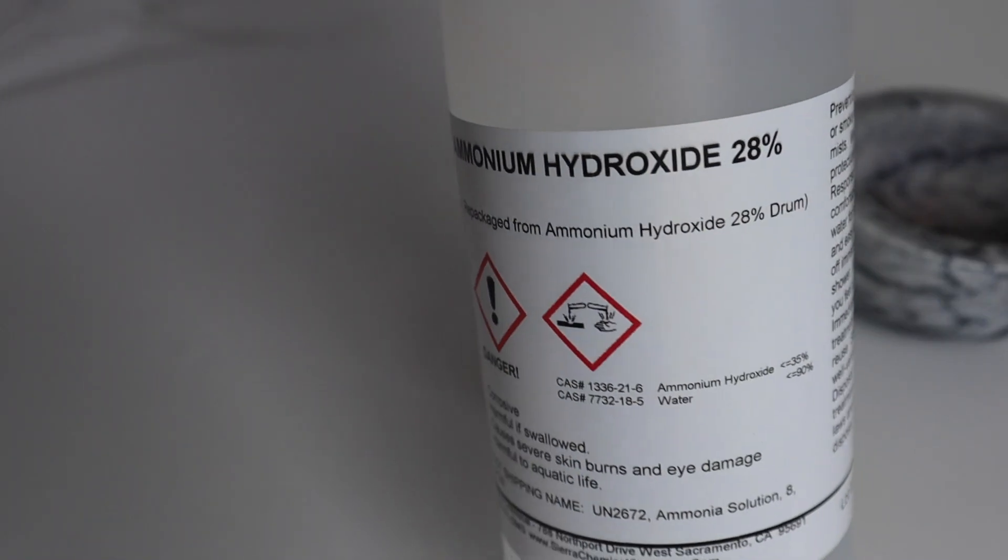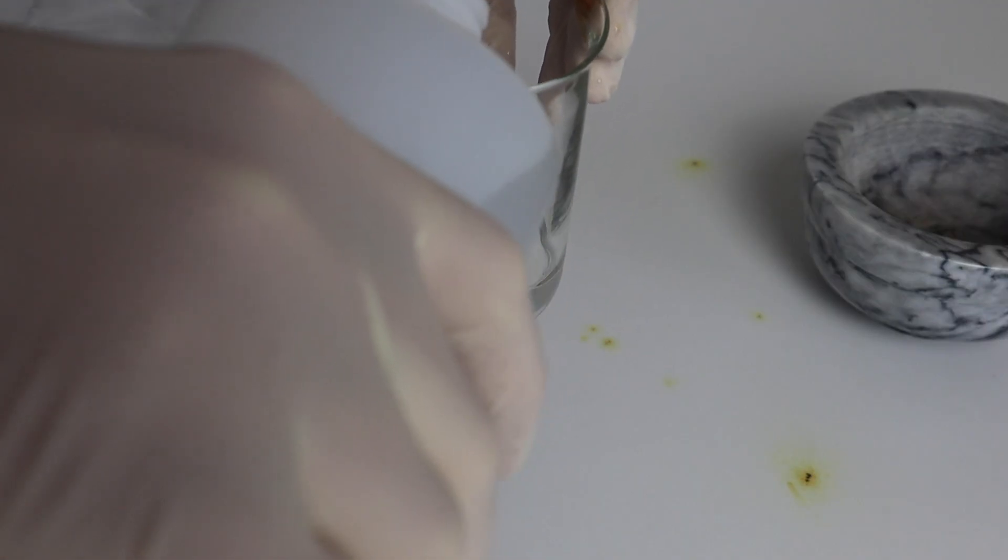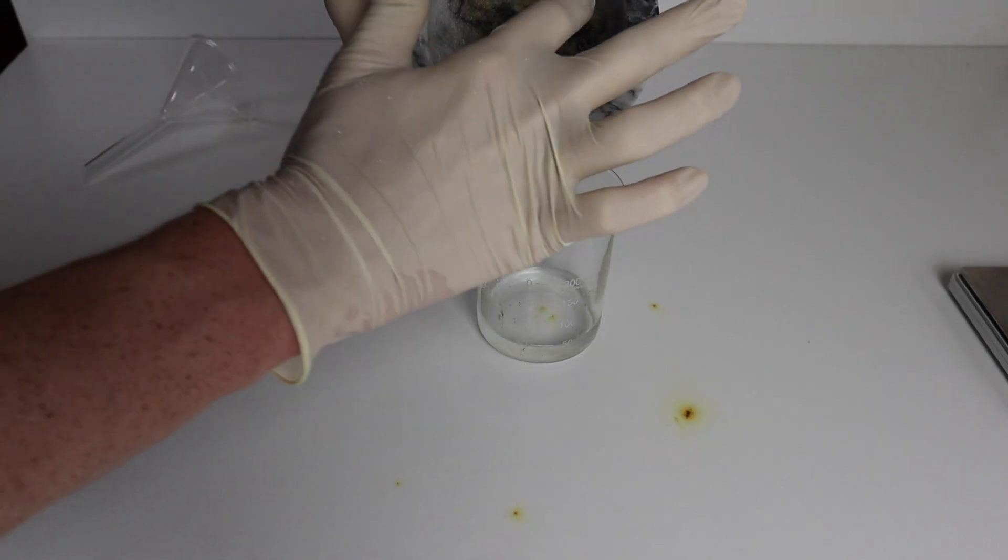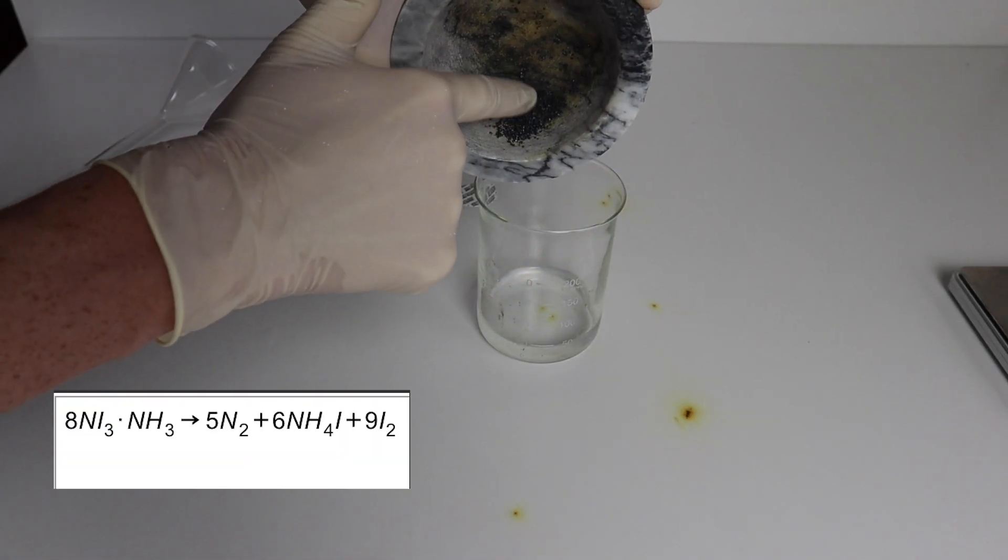The iodine can then be added to a beaker containing ammonium hydroxide. The reaction that is happening is shown in the bottom left of the screen.